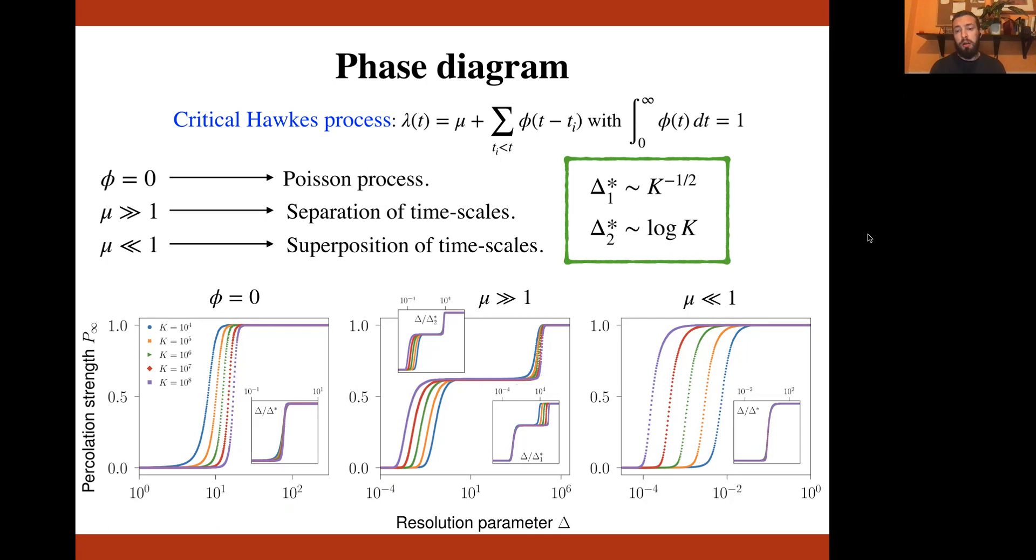Finally, if mu is much smaller than one, then there is not a separation of time scales. And in fact, we find a unique percolation transition whose critical point scales again as the transition related to bursts. So basically, it goes to zero as one over the square root of k.